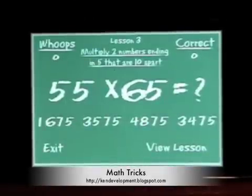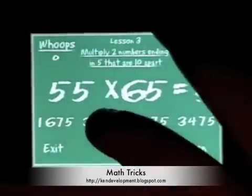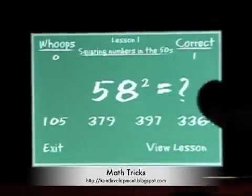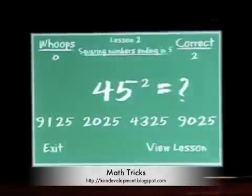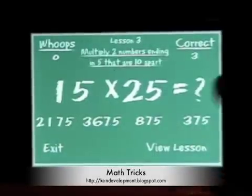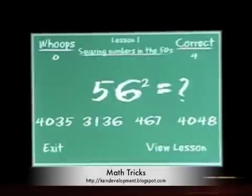So 55 times 65 — well that's 3575 of course. 58 squared — well that's 3364. 45 squared — you know, each of these they just get easier as they go along. See, I'm answering these fairly quickly.